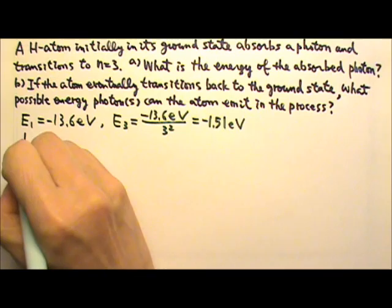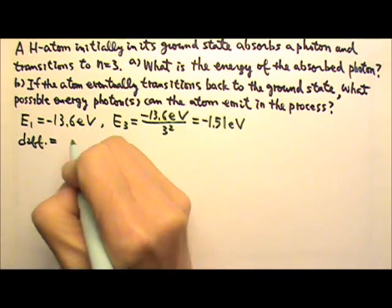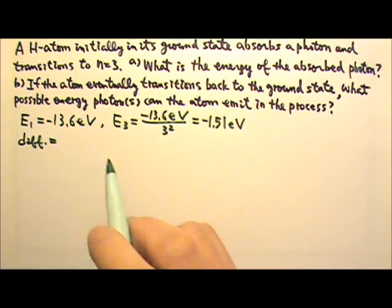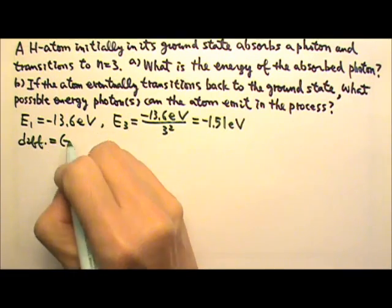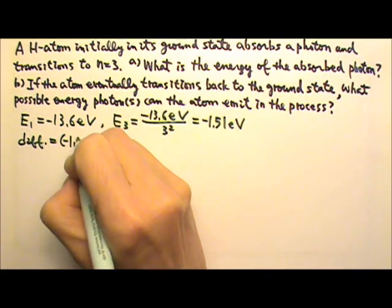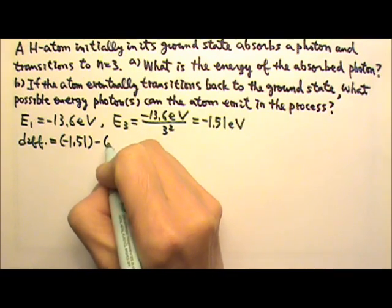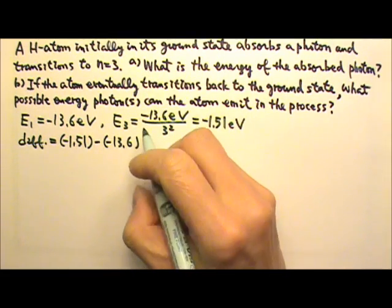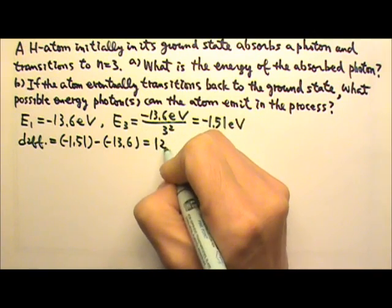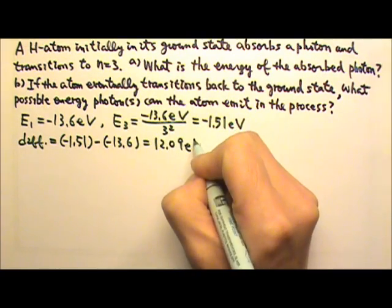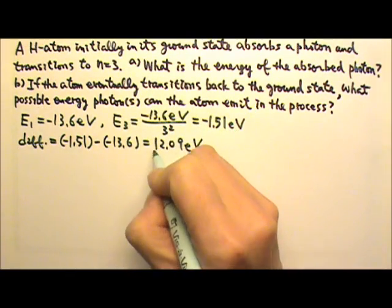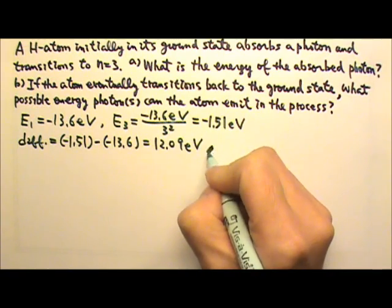So the difference is the upper state minus the lower state, because the upper state has more energy: negative 1.51 minus negative 13.6. So the energy involved is 12.09 eV. That means it has to absorb a photon with that much energy.